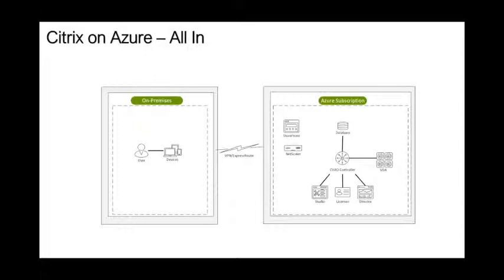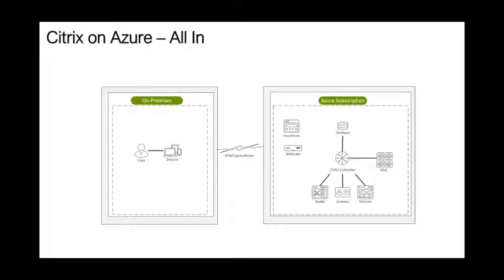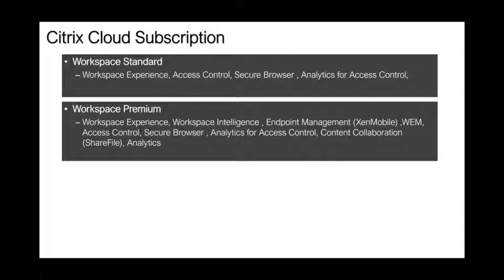Citrix Cloud is a subscription-based service with three different licensing types. The Workspace Standard includes workspace experience, access control, secure browser, and analytics. The Workspace Premium adds workspace intelligence, endpoint management, WEM, access control, secure browser, analytics for access control, and content collaboration via ShareFile. Finally, Workspace Premium Plus includes all of the above plus virtual apps and desktops and Citrix Hypervisor. There is a common misconception that there's no concurrent licensing in cloud — Workspace Premium Plus is actually concurrent licensing, making it the most expensive but equivalent to the traditional concurrent model.